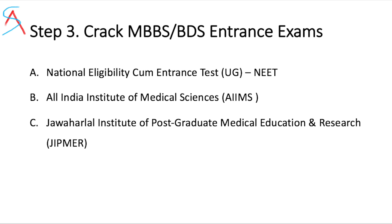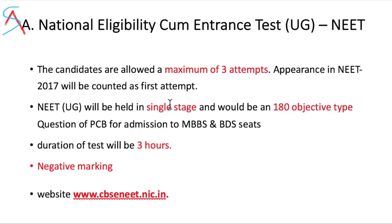Let's talk in a little detail about these entrance exams. NEET is conducted yearly. The forms are available from January. The exam is conducted in the first week of May and results are declared by the first week of June. There is now a maximum of three attempts from 2017. NEET UG is a single-stage exam with 180 MCQs covering physics, chemistry, and biology — half of biology is zoology and half is botany. If you crack NEET you can get seats in MBBS or BDS dental colleges. The duration is three hours and there is negative marking. For more details visit cbseneet.nic.in.